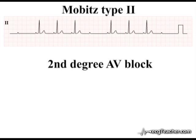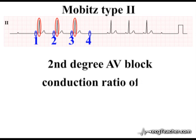Within each grouping, there are four P-waves, three of which are conducted to the ventricular myocardium. This is Mobitz type 2 second degree AV block with a conduction ratio of 4 to 3. Unlike Mobitz type 1, Mobitz type 2 carries the significant risk of progression to complete AV block, and is therefore associated with a significant mortality in the absence of intervention.